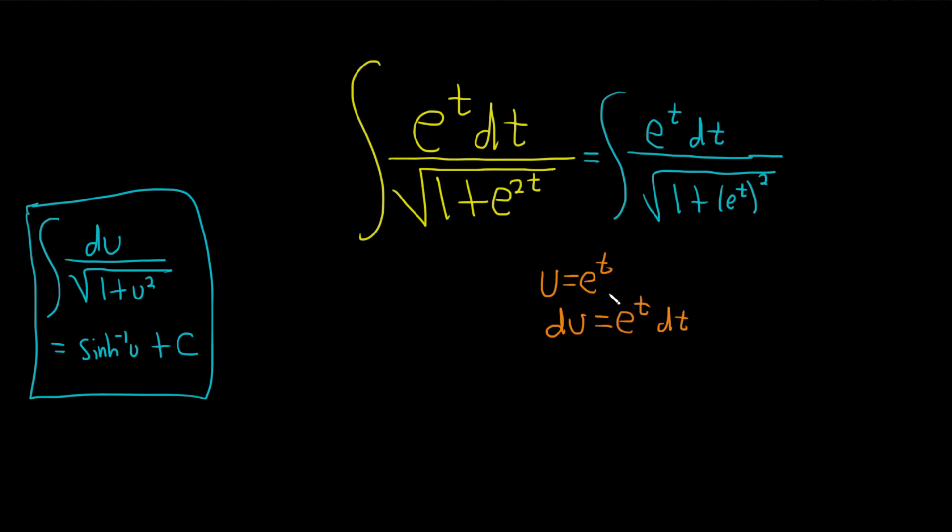And this is perfect, because this whole top piece now is just our du, so our integral becomes du over the square root of 1 plus u squared. And it matches perfectly.